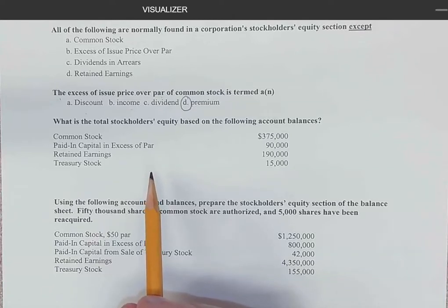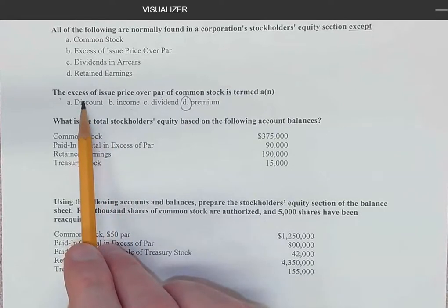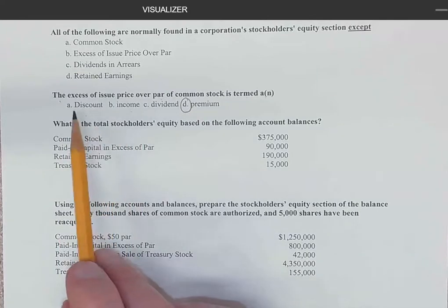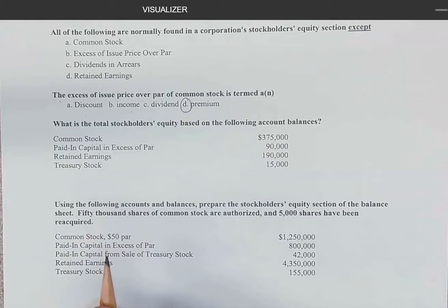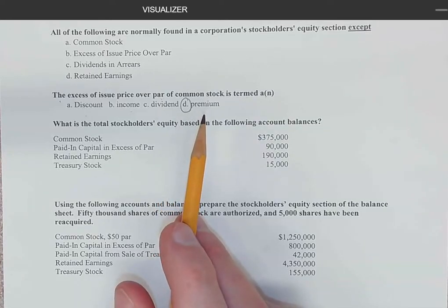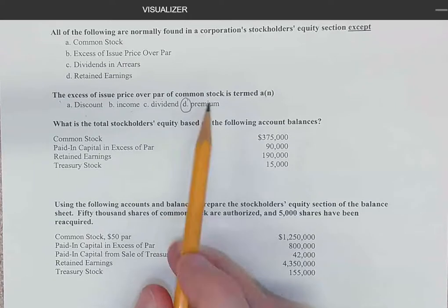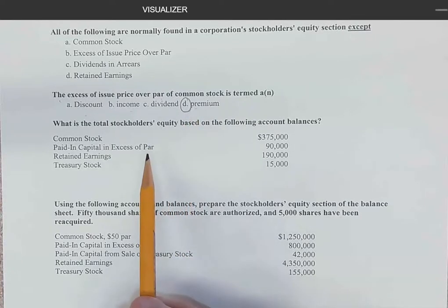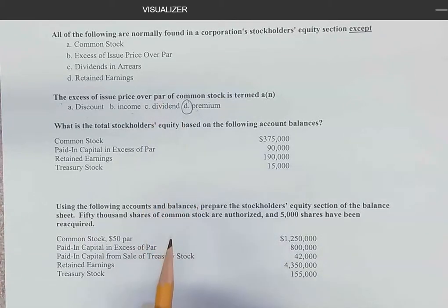If we sold stock for less than par, we would be selling it at a discount. With bonds, it can go either way based on market interest rates. Here, with stock, the market value is generally going to exceed par because, contrary to some textbook examples, par is set almost always at a really small amount — like a dollar or sometimes even a penny. So we're almost always going to sell stock at a premium, which is just the amount above par. For example, a $1 par stock selling at $5 has a premium of $4.